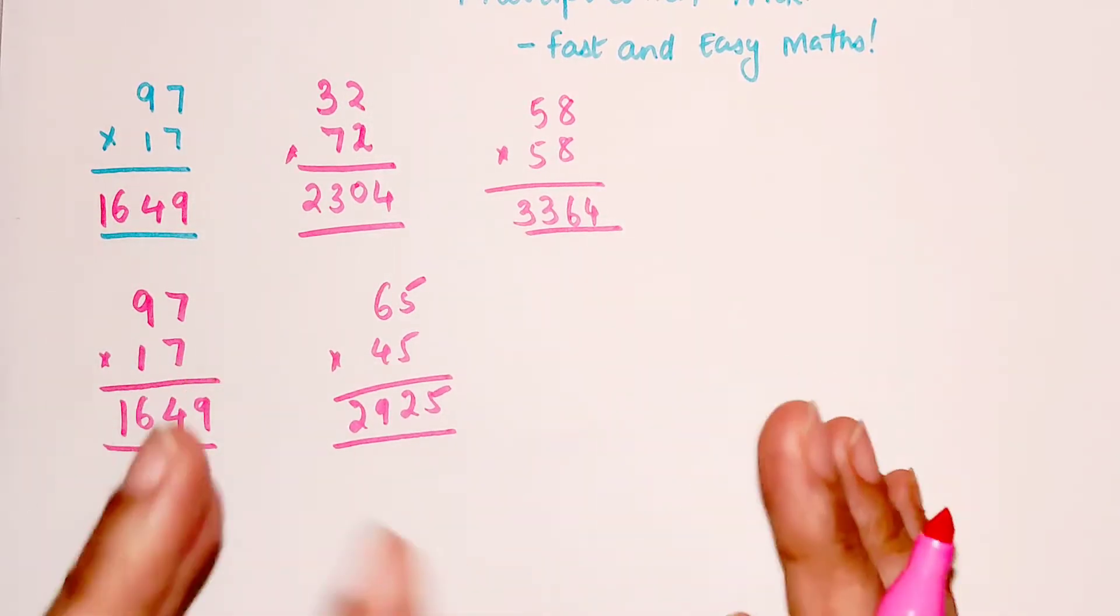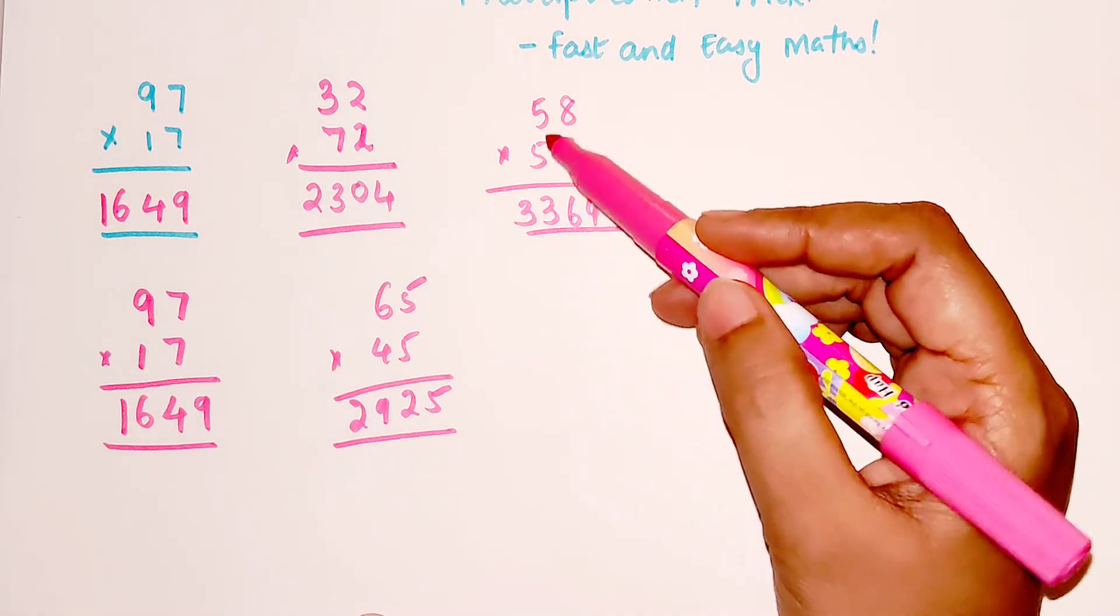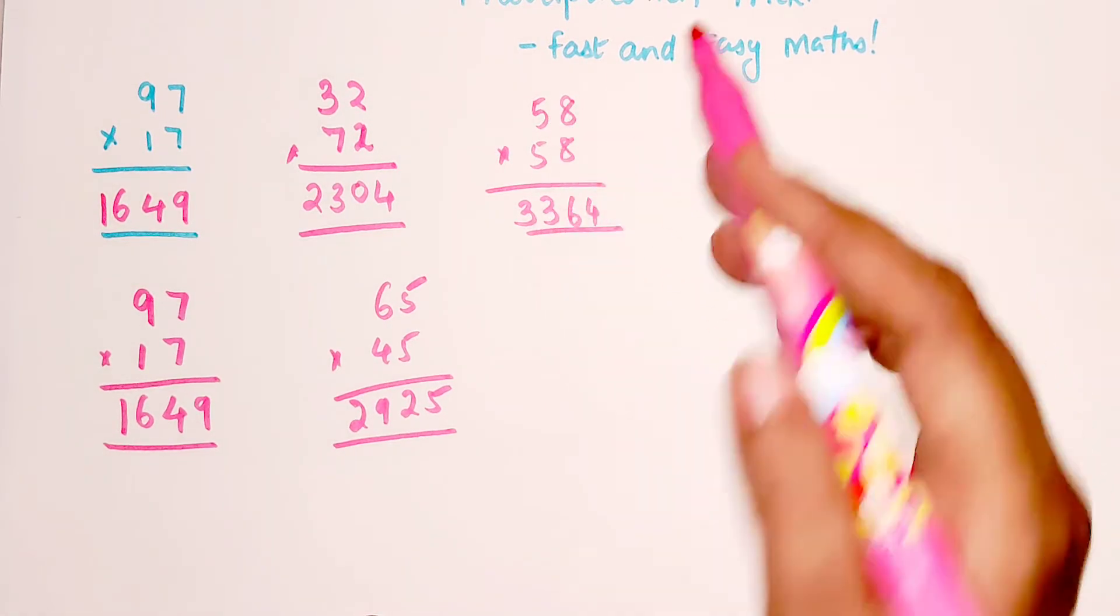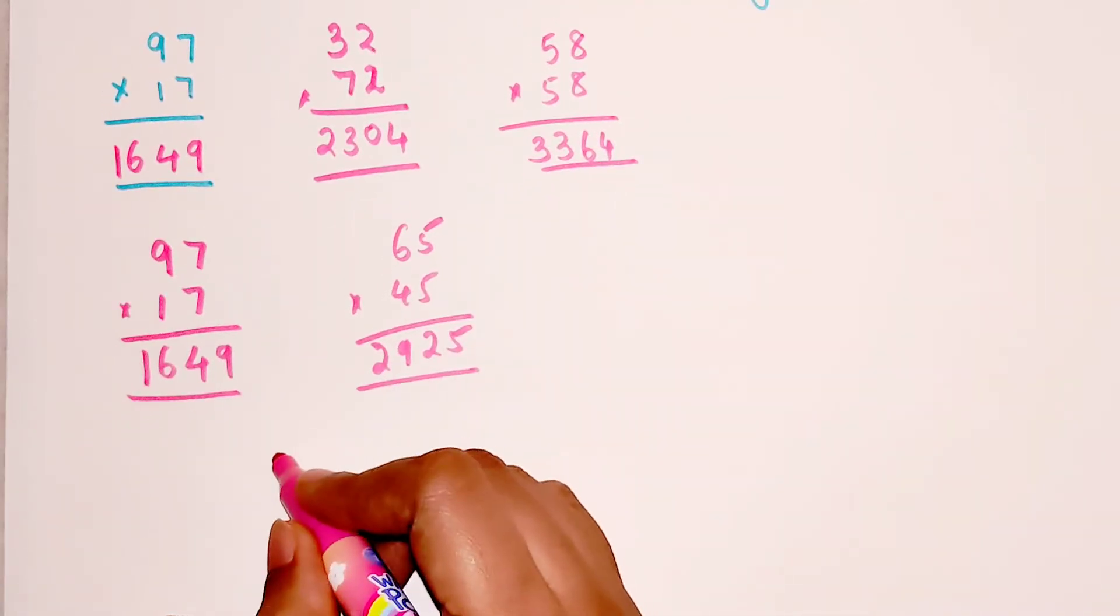So you saw how brilliant this trick is, you can do this in 15 seconds. Just you need to remember the logic. The unit digit has to be same and the 10th digit should add up to 10.